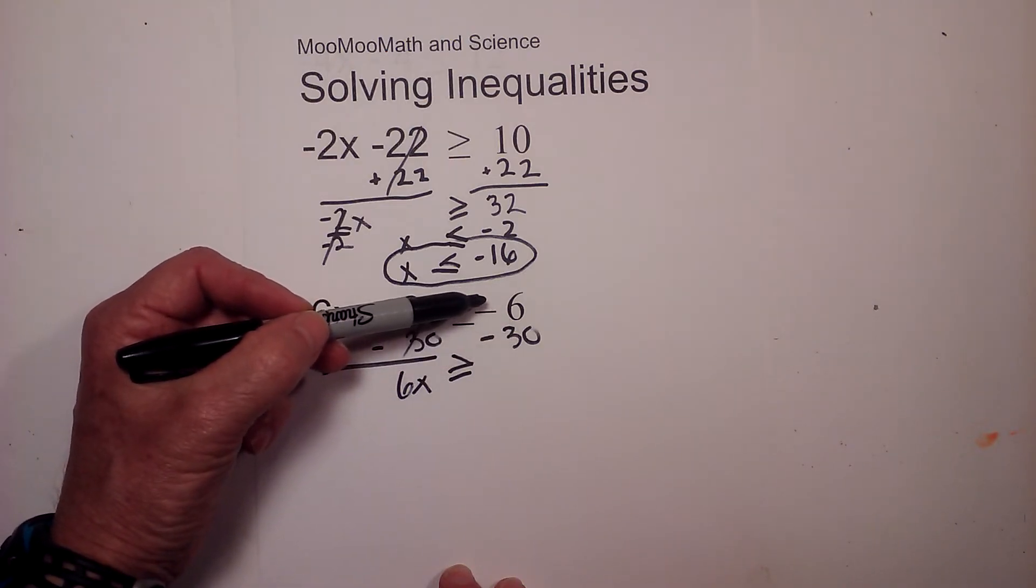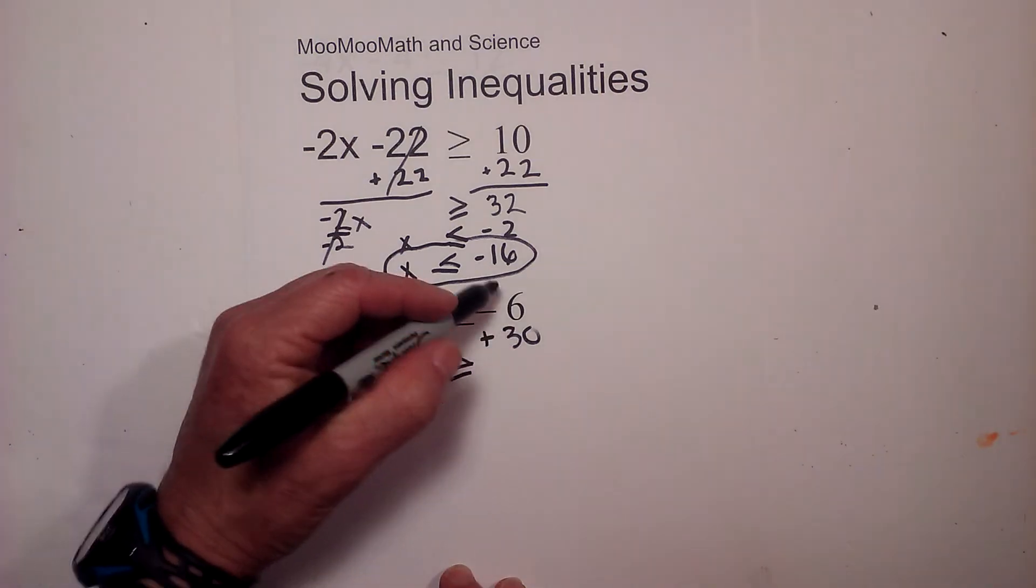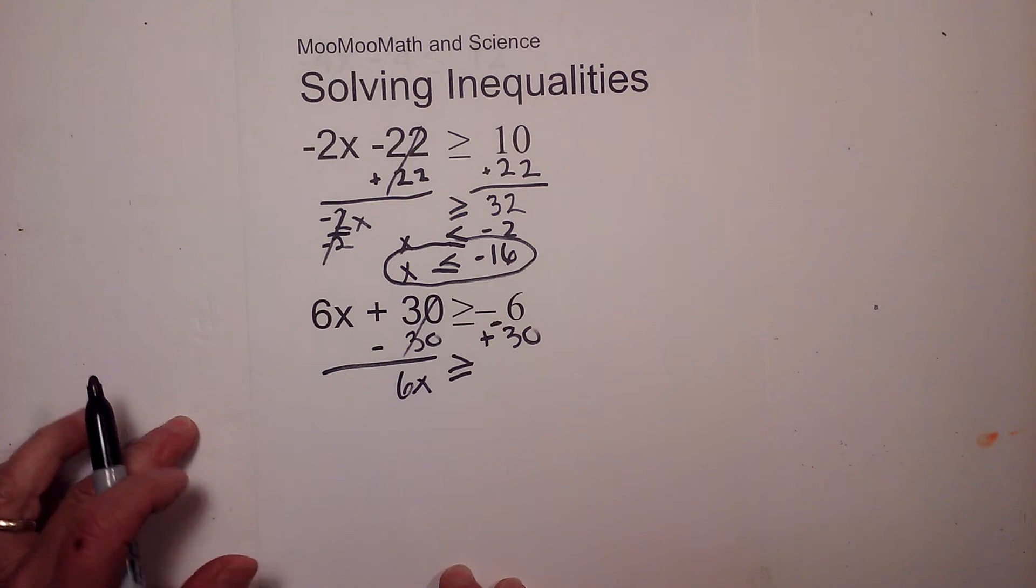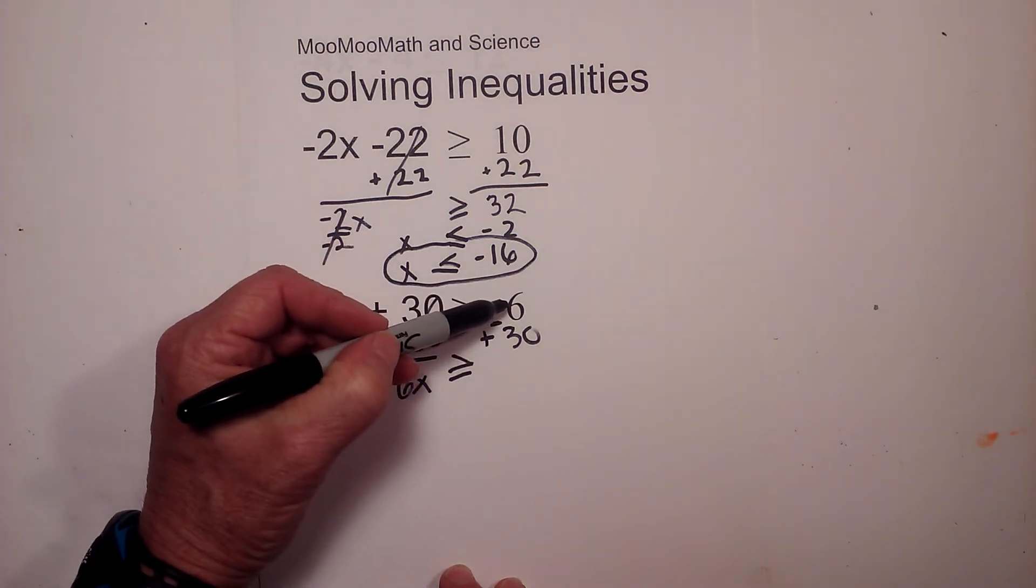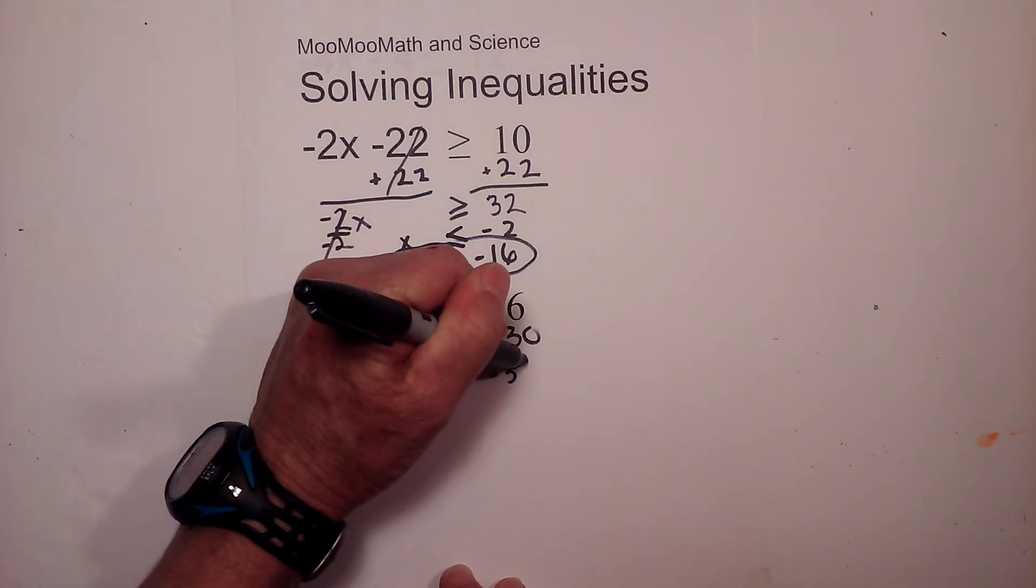Whenever I have a negative number and I'm subtracting, I like to convert it to an addition. So I will make the subtraction an addition. And that means I need to put an opposite sign on the 30. And that way you just have an addition problem. And so negative 6 plus negative 30 is negative 36.